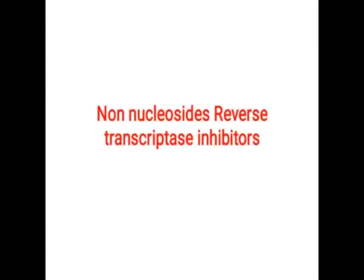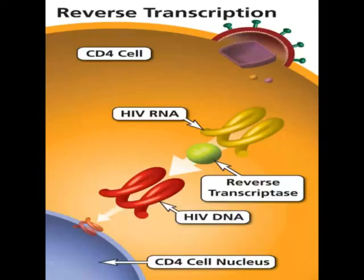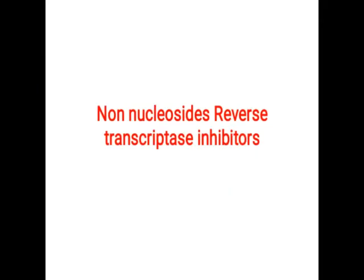The next drug is abacavir. Similarly, there is absence of the hydroxy group and addition of a cyclopropyl group. Abacavir is converted by kinase enzyme into monophosphate, diphosphate, and triphosphate, which enters DNA or RNA synthesis, forms a false nucleotide, and terminates the chain elongation process.